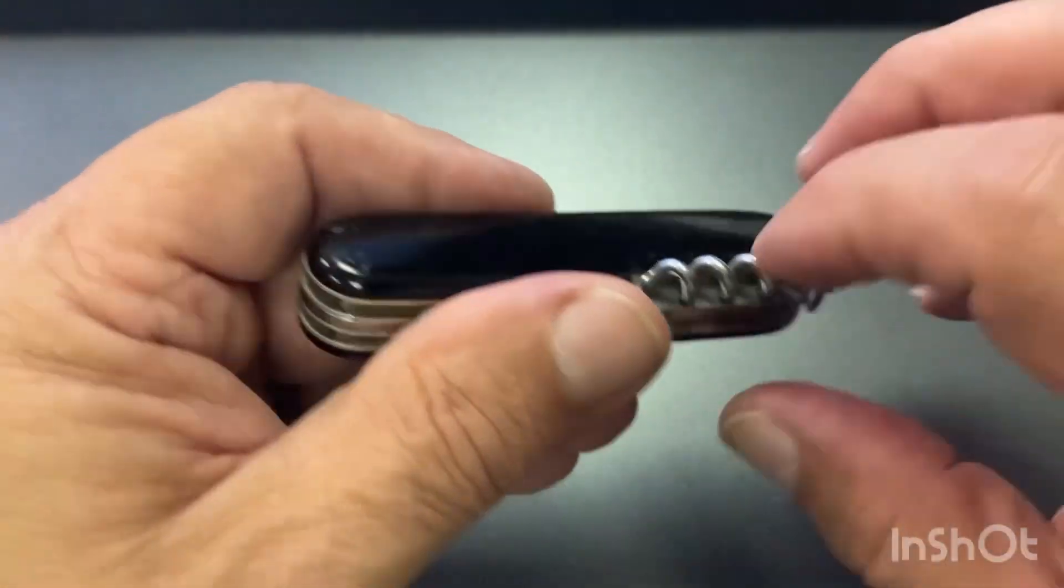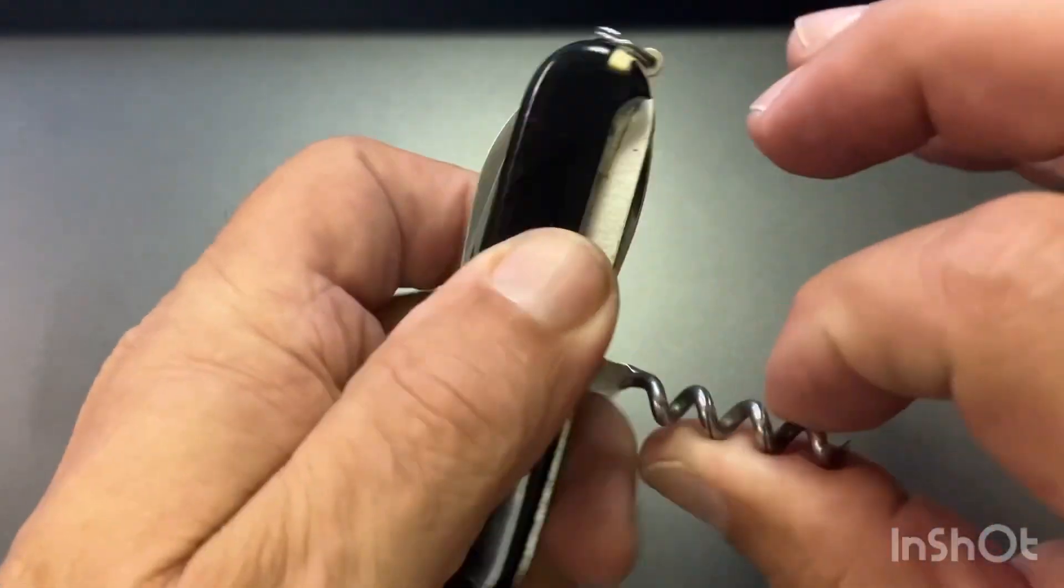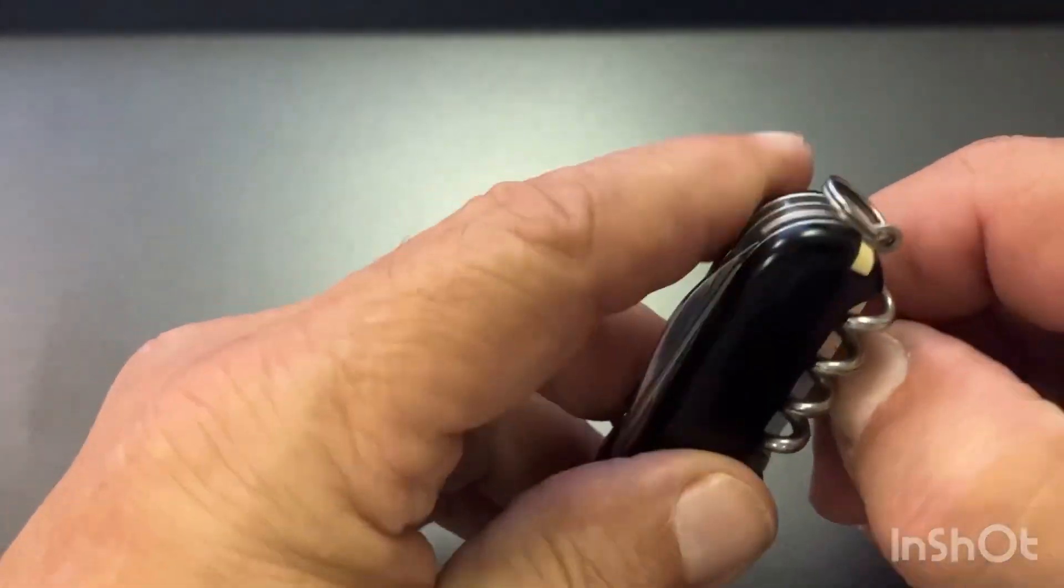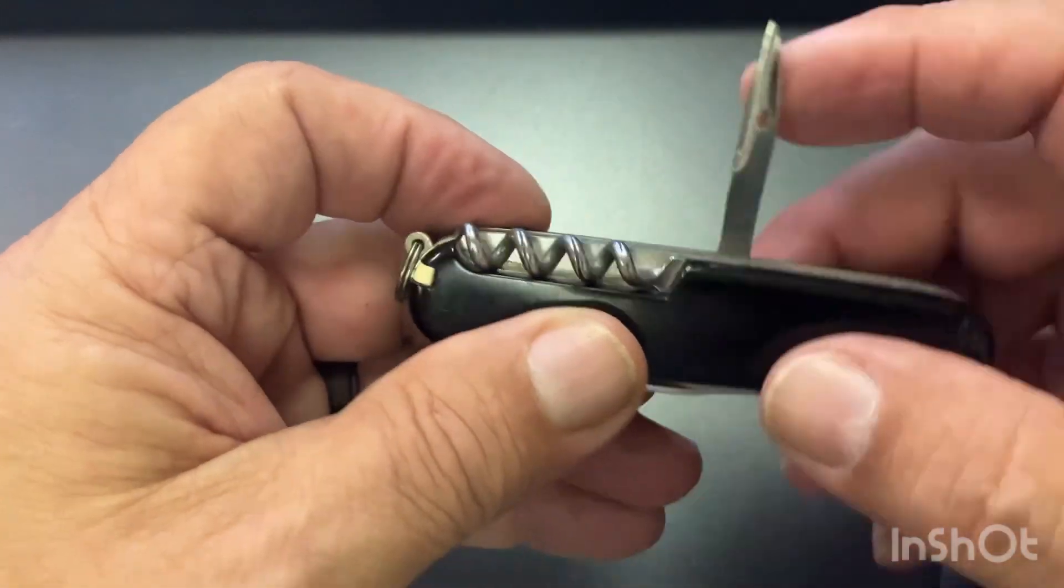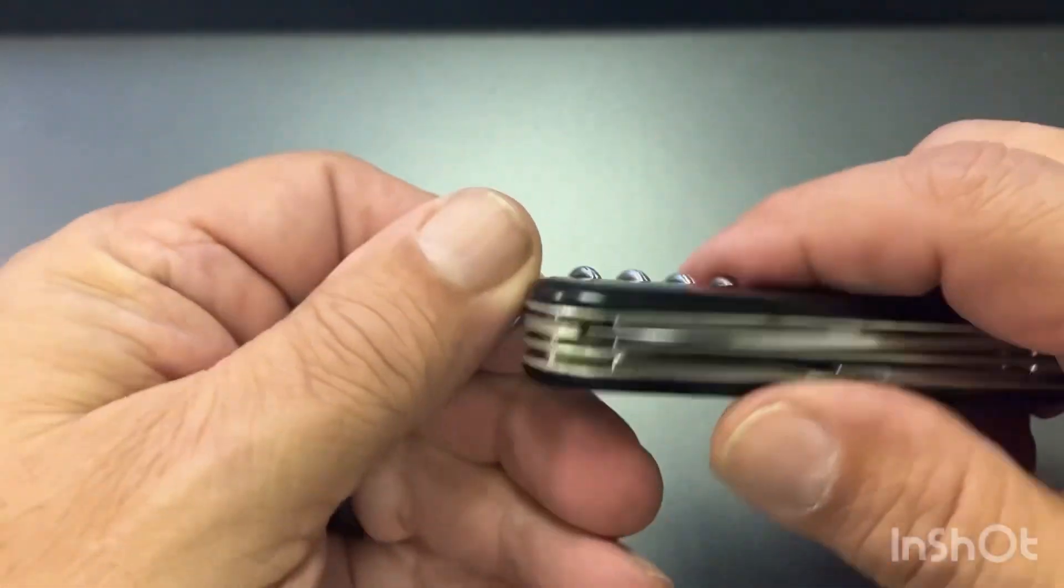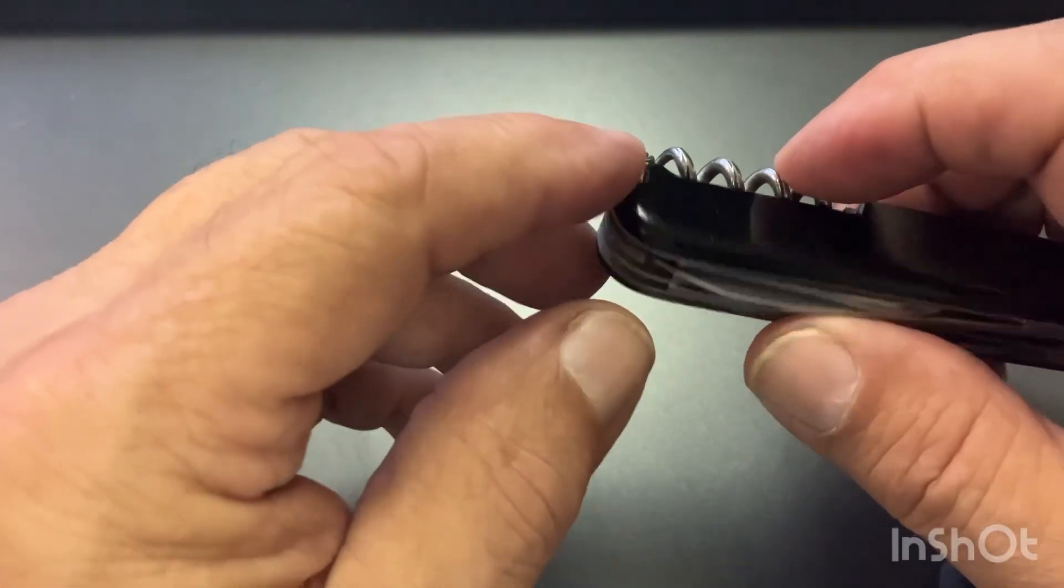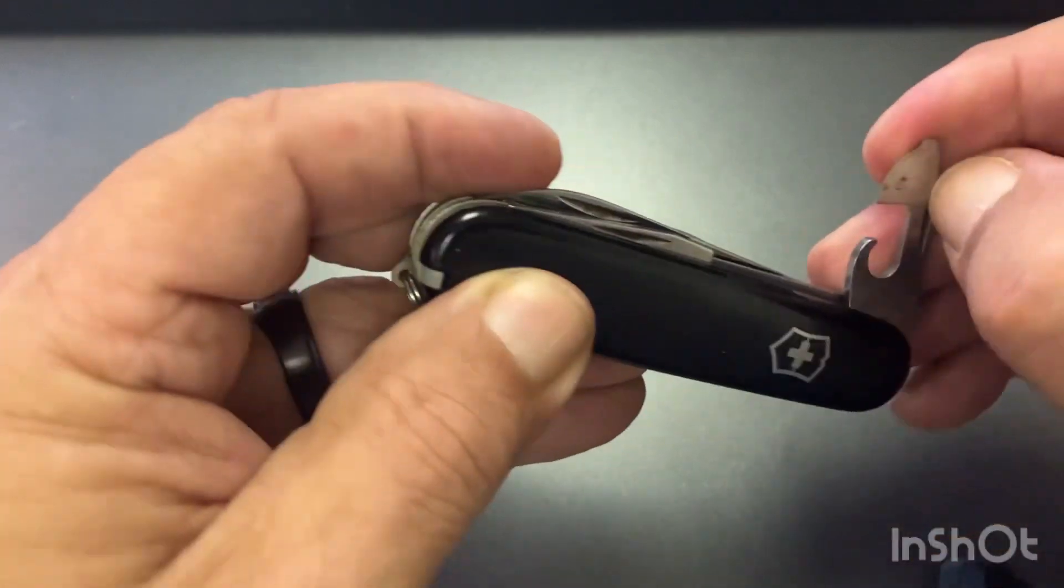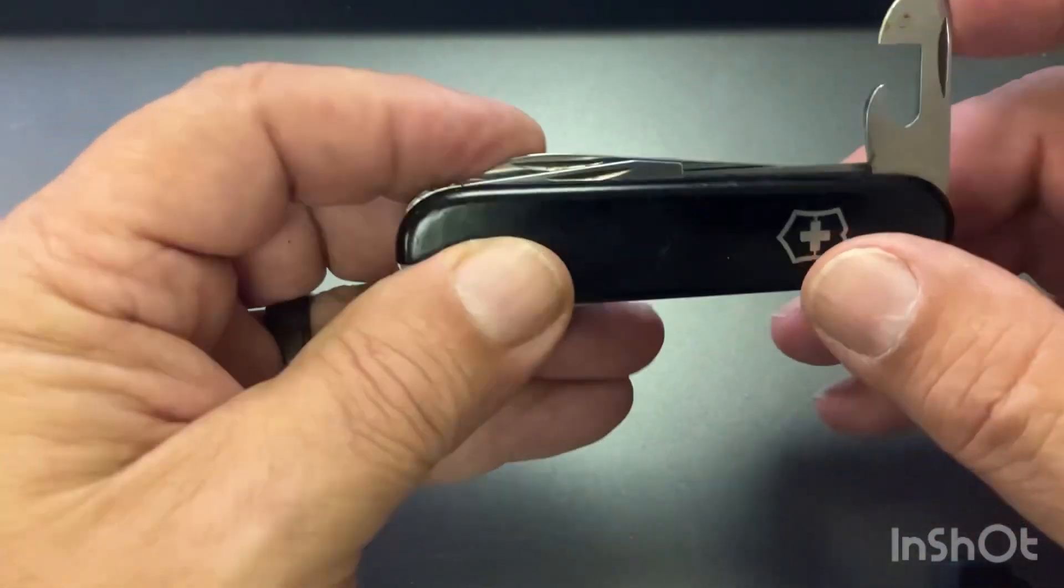That's your 13 functions. Go through them real quick again. You got the corkscrew is one. You've got your sewing awl leather punch here, that's two. Three with the key ring, four and five with the toothpick and your scale tools. You've got the small screwdriver, that's six.